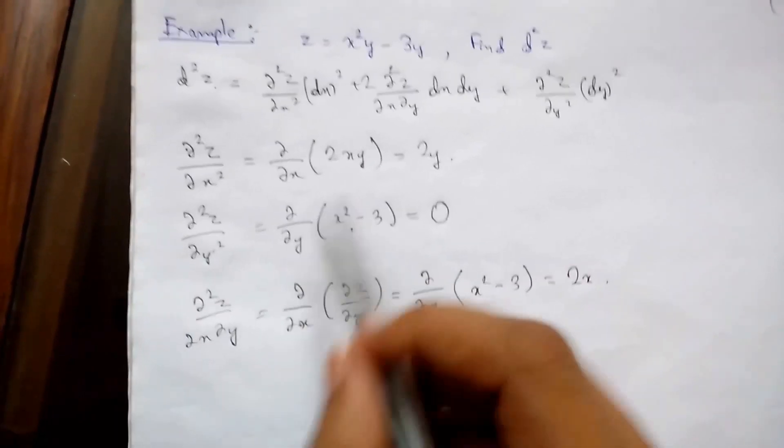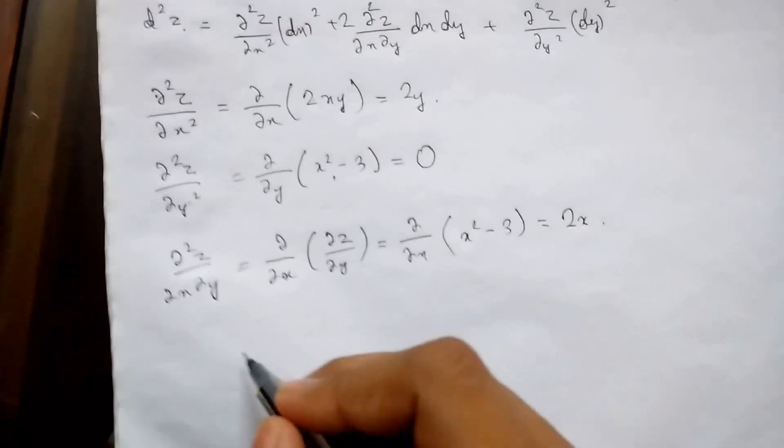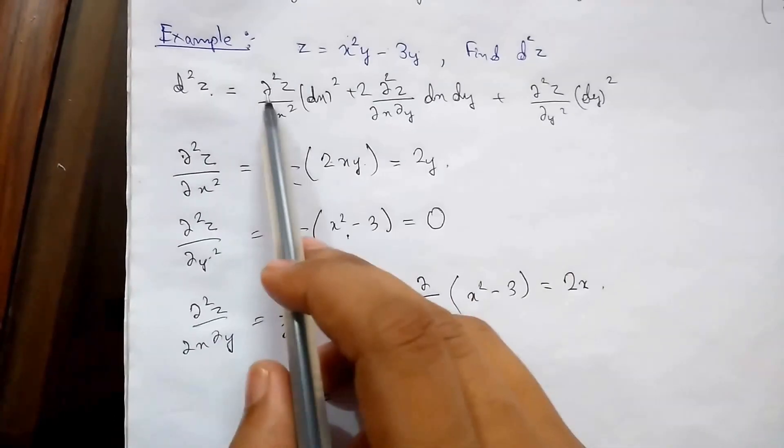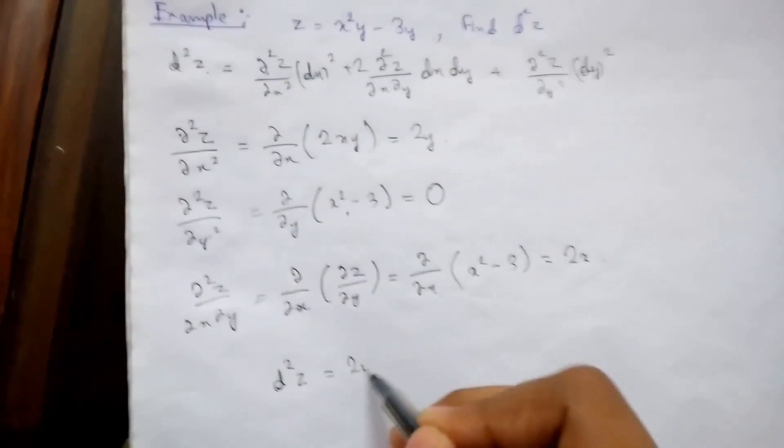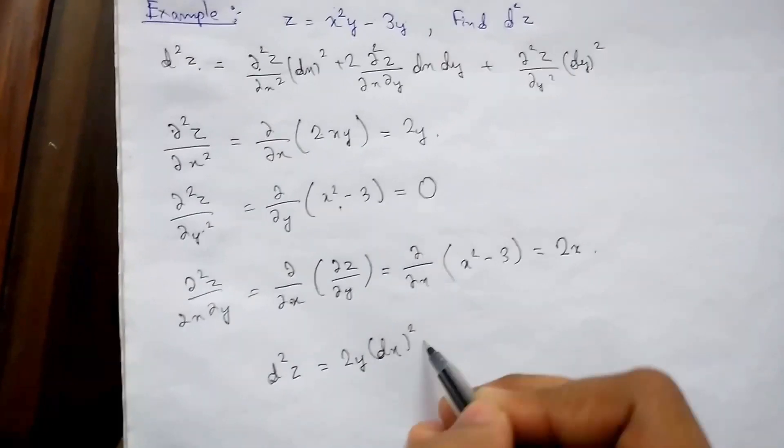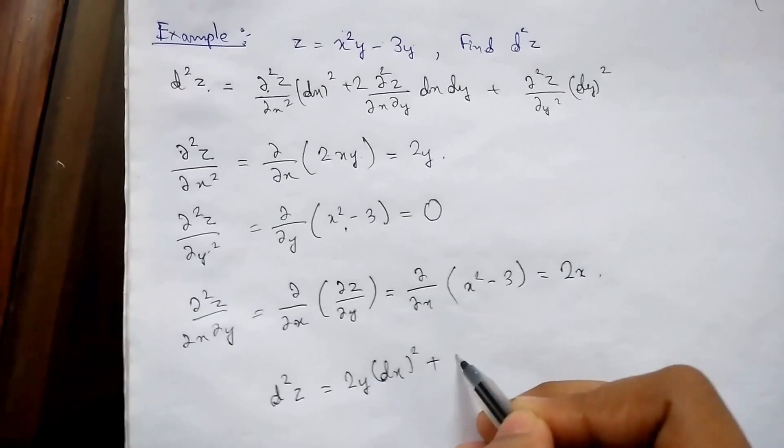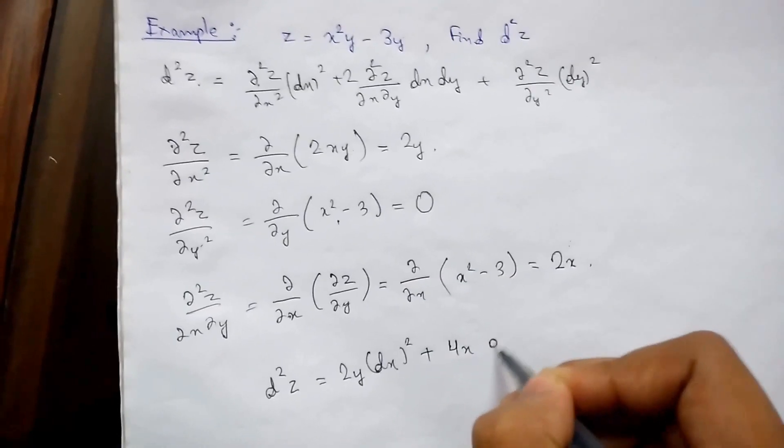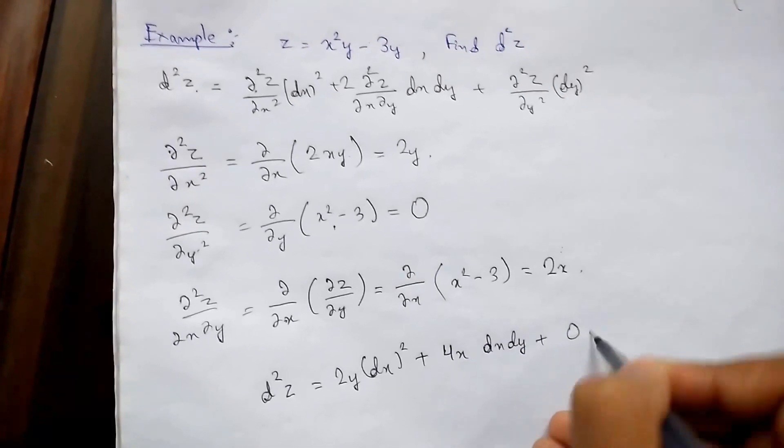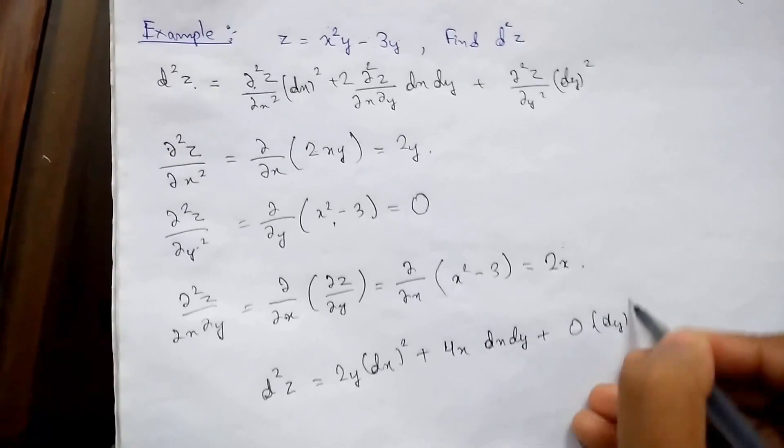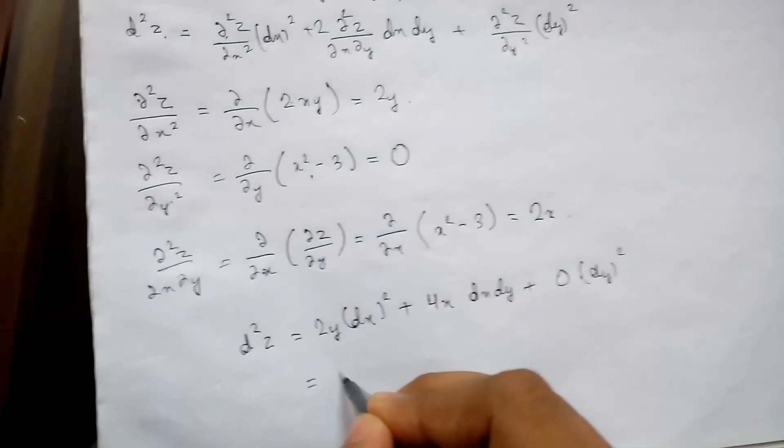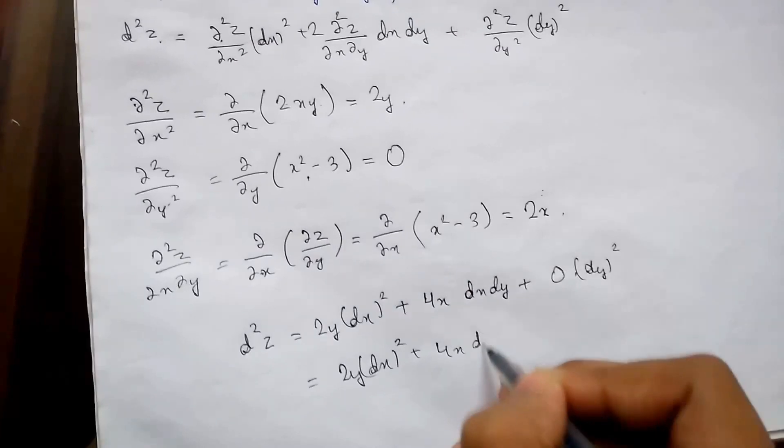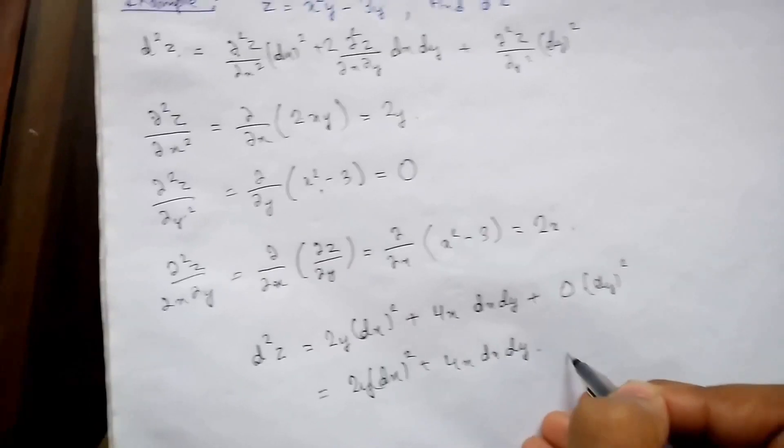So now since we got all the values we will put the values. So d2z will be equals to 2y dx whole square plus 2x that will be 4x dx dy plus 0 times dy whole square. So we get our answer as 2y dx whole square plus 4x dx dy. So this was our answer.